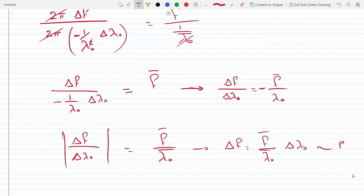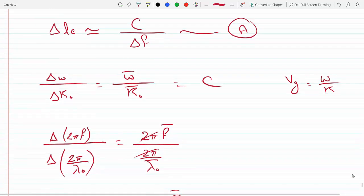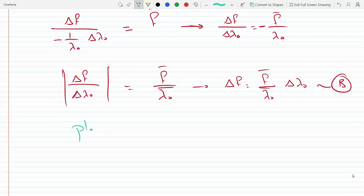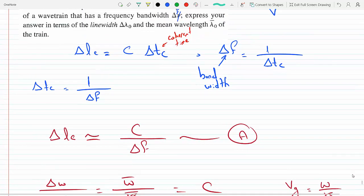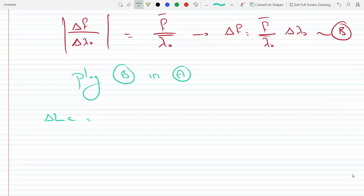And so if I just take the magnitude of that I will get ΔF—I could remove the minus sign—and so change in the frequency is equal. Let's call this equation B.